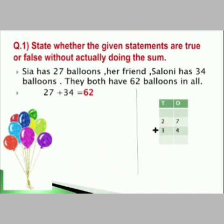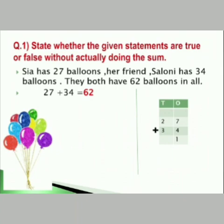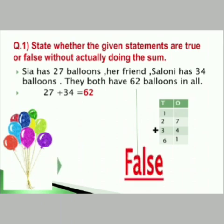Sia has 27 balloons. Her friend Saloni has 34 balloons. They both have 62 balloons in all. 'In all' means addition, so by adding 27 and 34 the answer should be 62. 1's column: 7 plus 4 is 11 — write 1 in the 1's column and carry 1 to the 10's column. 10's column: 1 plus 2 is 3, and 3 plus 3 is 6. So the answer is 61, not 62. Your answer is false.